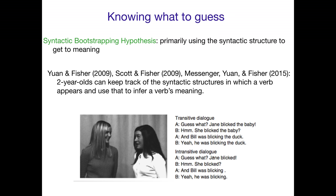As opposed to an intransitive dialogue: 'Guess what? Jane blicked.' 'Hmm, she blicked?' 'Yeah, and Bill was blicking.' 'Yeah, he was blicking.' There's no object after the verb, which for adults signals an intransitive meaning — something like sneeze or sleep. So kids match the transitive version with kissing and the intransitive version with sneezing, and they're able to figure out which one 'blicking' is likely to refer to.